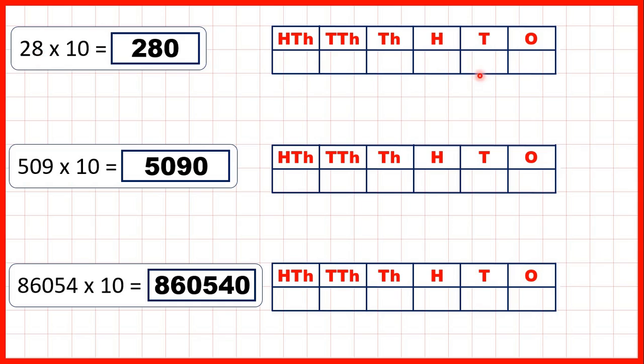So for this first question we started with 28. To multiply by 10 we can move the digits one square across or one place value across. But now we have an empty ones column and to make it clear that the 2 is now in our hundreds and the 8 now in our tens we need to write a zero in our ones to give us our answer 280.